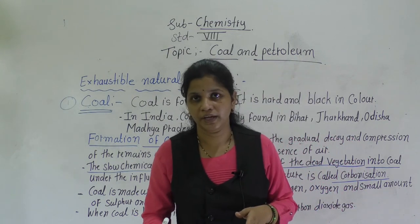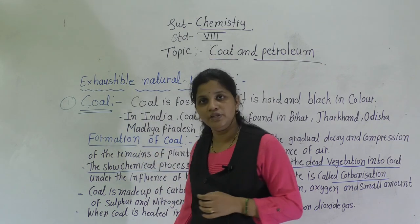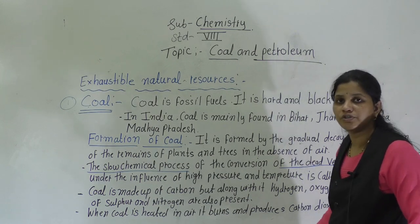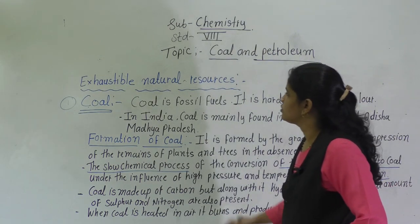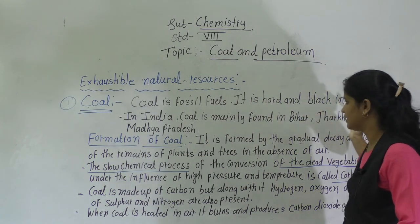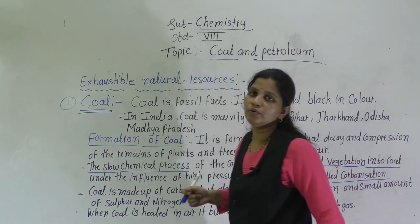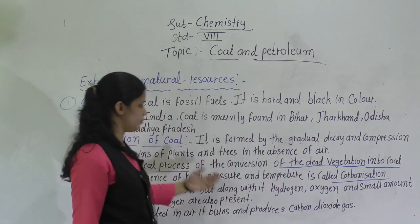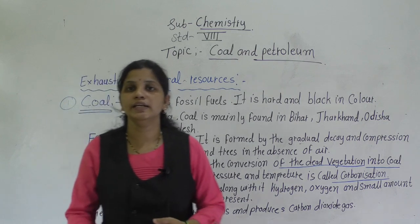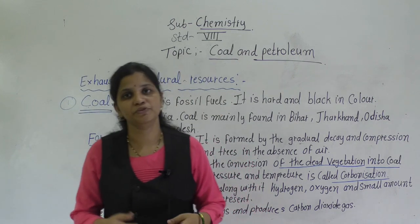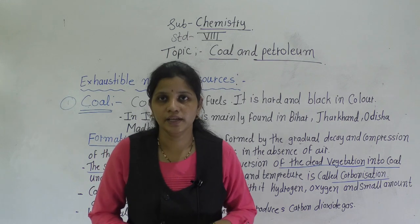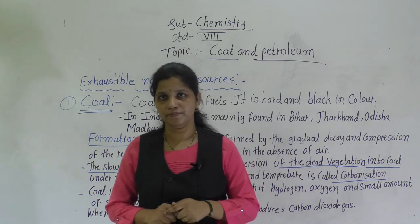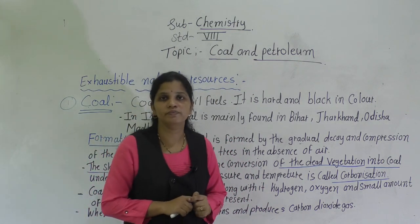How coal is formed may be a question in your exam. Write all these points in your chemistry notebook. Coal is a fossil fuel, hard and black in color, found in Bihar, Jharkhand, and Odisha. In the next period we will see the types of coal. If you have any doubt, you can ask me. Thank you.